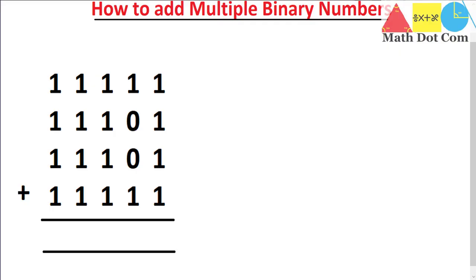Hello everyone. Today we are going to learn how you can add multiple binary numbers. As we have seen in our previous lecture, we learned how to add two binary numbers. That was quite simpler, but when you come across more than two binary numbers, or when the bit-by-bit sum is greater than 3, the method becomes different. Here we have an example with four binary numbers that we will add together.